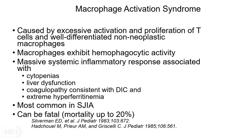In rheumatology, the term macrophage activation syndrome refers to a clinical phenomenon caused by excessive activation and proliferation of T cells and well-differentiated non-neoplastic macrophages exhibiting hemophagocytic activity. The expansion of these cells leads to a massive systemic inflammatory response, typically associated with four cardinal features: cytopenias, liver dysfunction, coagulopathy consistent with disseminated intravascular coagulation, and extreme hyperferritinemia.